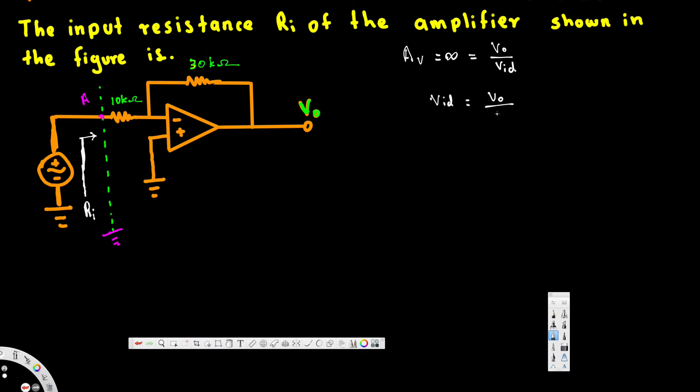Vid = 0, and Vid is basically the voltage across the positive terminal minus the voltage across the negative terminal. We found out that equals zero, therefore voltage across the positive terminal equals voltage across the negative terminal.